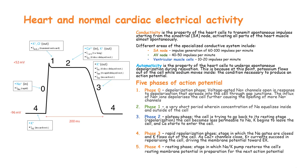Phase two is known as the plateau phase. In this plateau phase, the cell is trying to go back to its normal resting state, known as repolarization. The cell becomes less permeable to sodium ions as potassium begins to leave the cell and calcium ions start entering into the cell. Phase three is the rapid repolarization phase. In this phase, the sodium channels close and potassium starts flowing out of the cell — potassium efflux. As calcium channels close, this potassium ion current succeeds in repolarizing the cell.